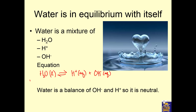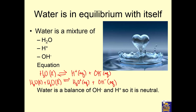Another way to write that is H₂O liquid plus H₂O liquid — if they run into each other every so often, they will turn into H₃O⁺ and OH⁻. What you might notice is that there are hydrogen ions, which are the same as hydronium ions, and hydroxide ions of water.